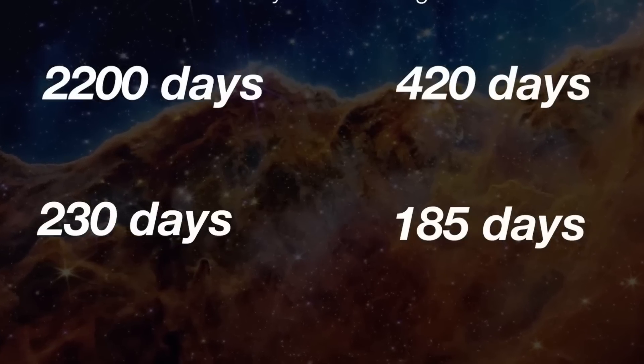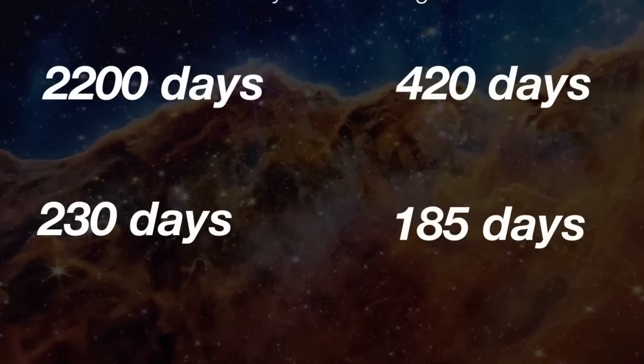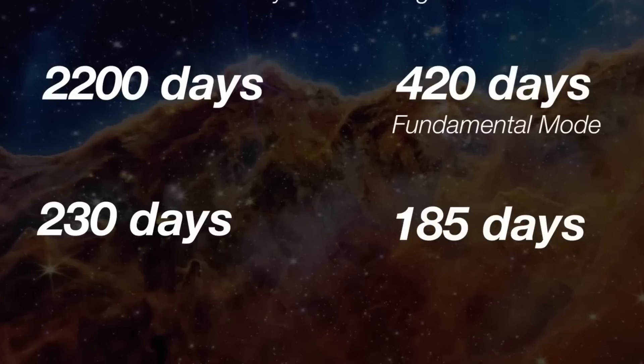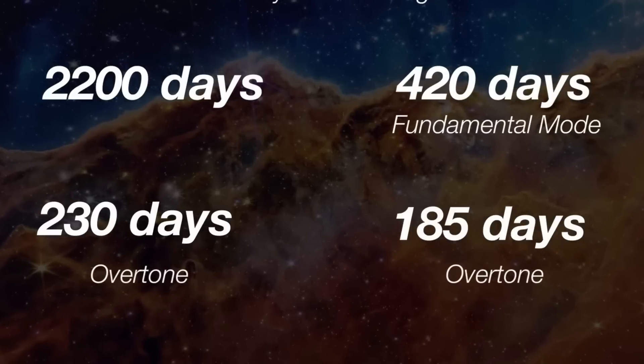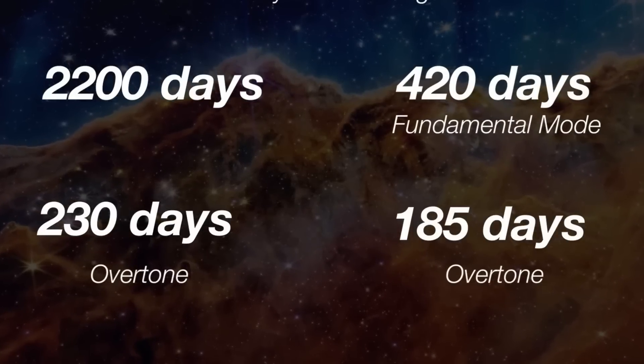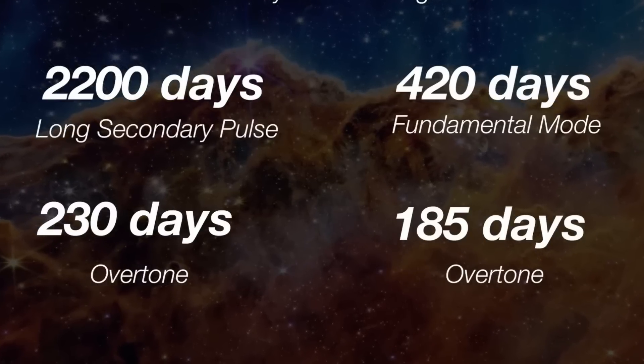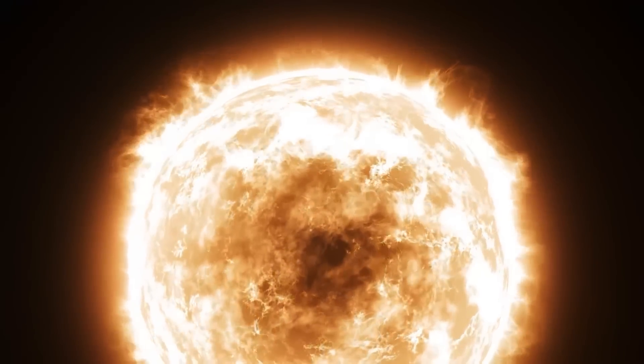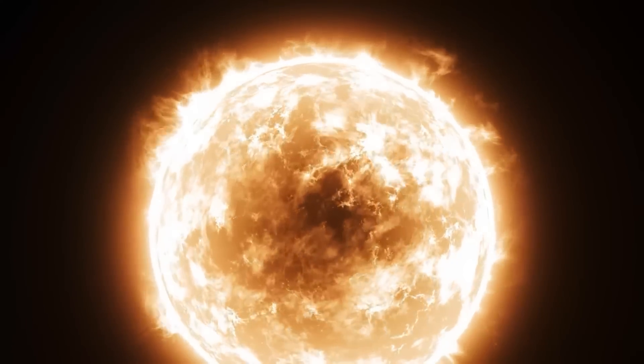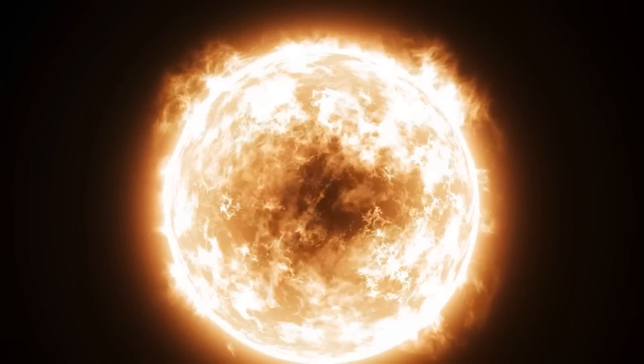Usually, astronomers consider the 420-day period as the primary pulsation, with the shorter cycles acting as overtones. Interestingly, the 2,200-day cycle or 6-year period isn't part of these pulsations. Instead, it's the secondary period of unknown origin that's common among supergiant stars.